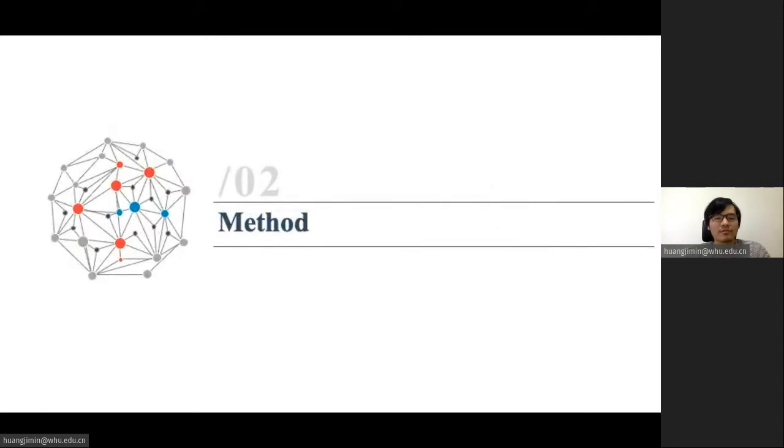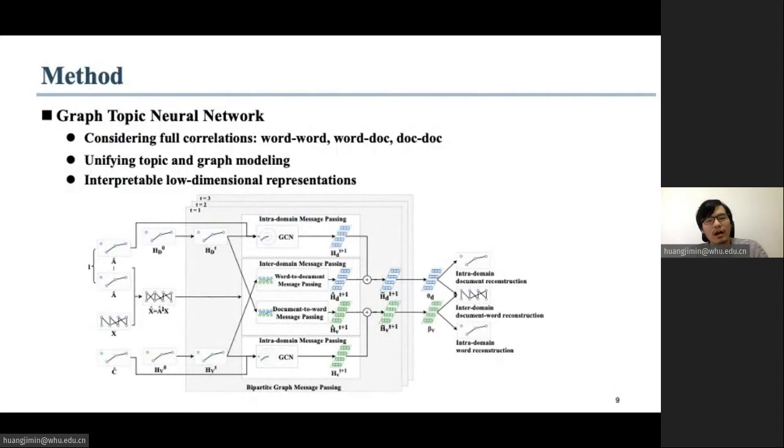Therefore, to address the above issues, we propose the graph topic neural network GTNN. In this part, I'm going to introduce our method in detail. Our model takes full semantic correlations in documents into consideration and unify topic and graph modeling, thus to extract interpretable low-dimensional document and word representations in a latent topic space.